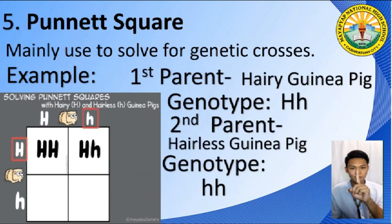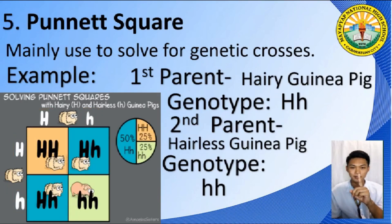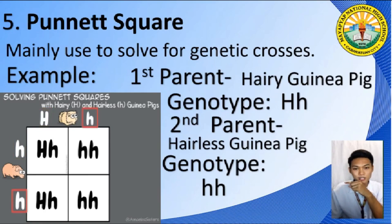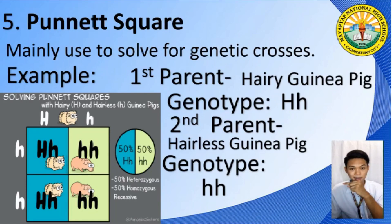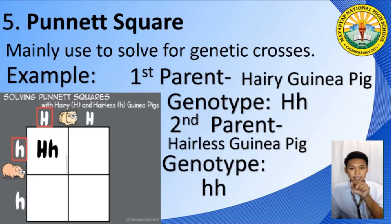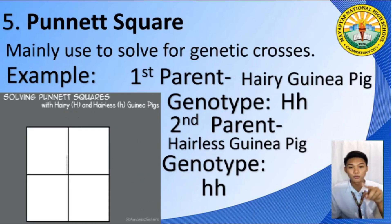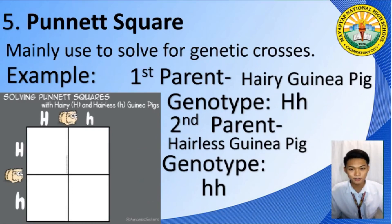On the top part of the Punnett Square is the genotype of our first parent, the hairy guinea pig, which is a capital letter H and a small letter H. On the left side of your Punnett Square is the genotype of our second parent, the hairless guinea pig, which is two small letters H. Inside each square are the offspring — their possible offspring and their genotypes. From that genotype in each square, we will be determining the traits.